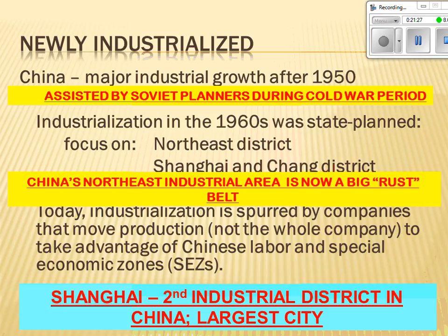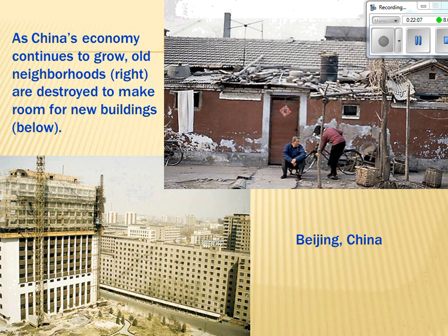China has had major industrial growth after 1950 and is further developing industrialization, wanting to move into the hinterland because it's cheaper labor there. China also offers Special Economic Zones, or SEZs, where there are no environmental restrictions, free trade, and cheap labor. Shanghai has become the second major industrial district in China as a result. China is growing and building, with people moving into those jobs, though some neighborhoods have been disrupted and the cultural landscape is changing.